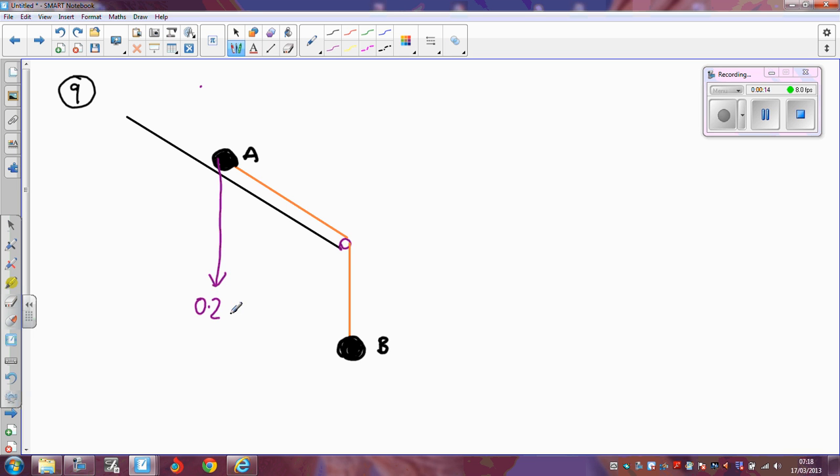And we also know that the weight of B is 0.1g. Now we've got a smooth and extensible string, so there's tension in the string, that's what's holding B up, so the tension on B is acting upwards, the tension on A is what's tending to make it go down the slope.